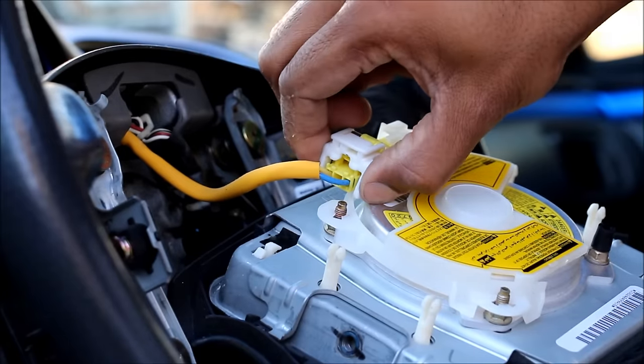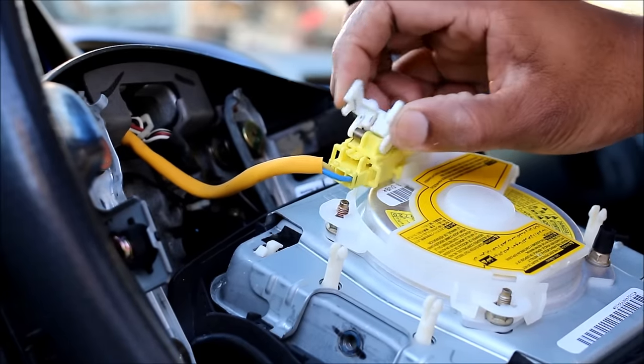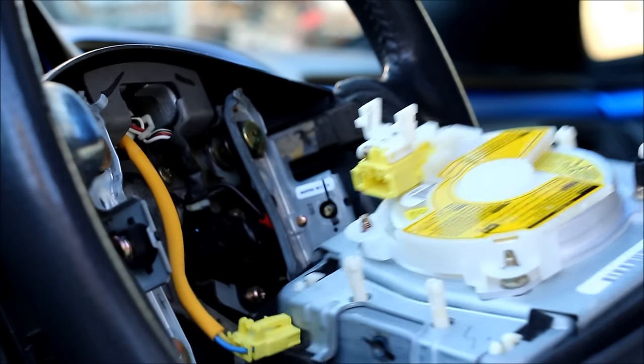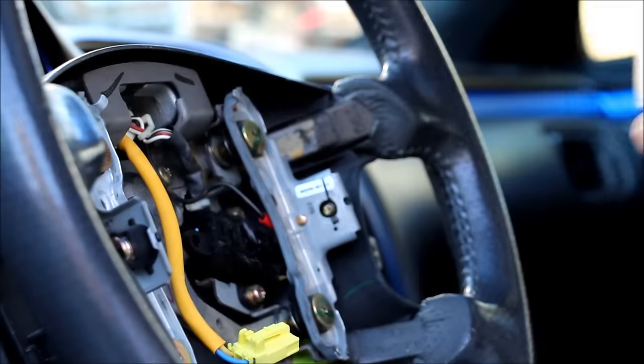To remove the airbag connector, I'm going to squeeze this white tab and pull it up, and then squeeze the yellow connector and pull it out. Then I can remove the airbag and place it face up safely.